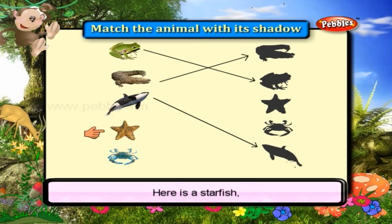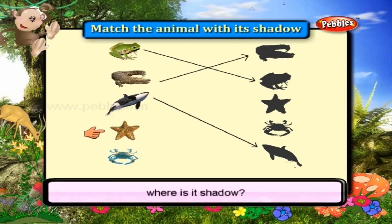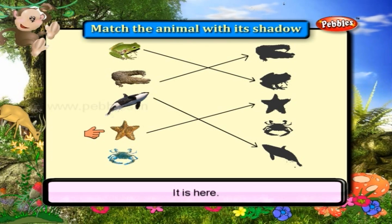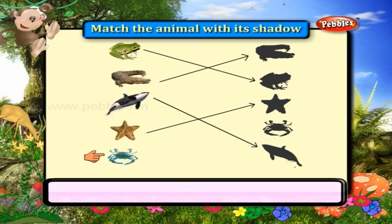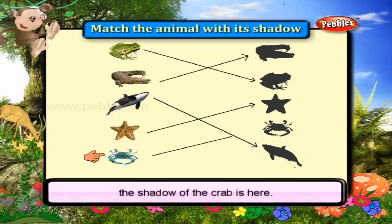Here is a starfish. Where is its shadow? It is here. This is a crab. The shadow of the crab is here.